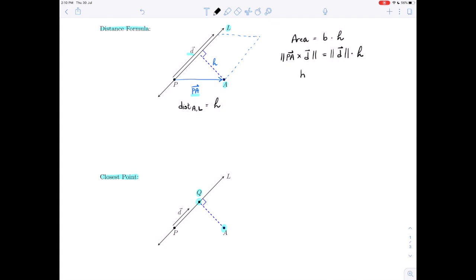So the distance, the height that we're looking for, which is the distance from A to L, well, all we have to do is divide. So the norm of PA cross d, divided by the norm of d. So there is a lovely distance formula. If all we need to know is the distance from a point to a line, we can use this vector-based formula to calculate that.